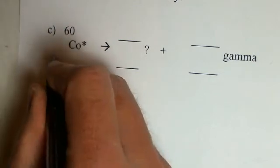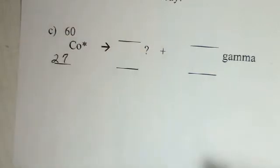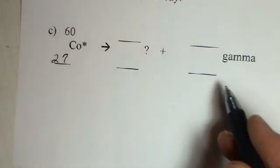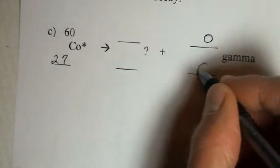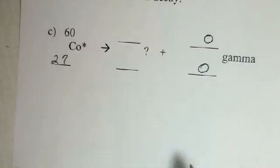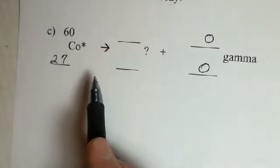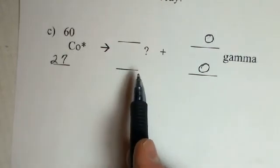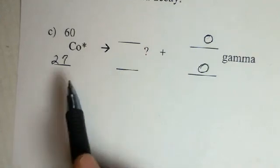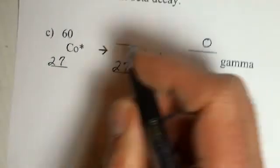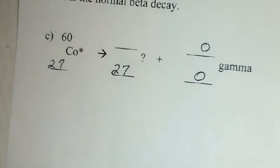Now cobalt has 27 protons. The gamma that comes off, we look now to fill in its blanks. The gamma has no protons or neutrons. The gamma has no charge. It's a photon. And now we have to complete the reaction over here. We have 27 for the charge number on the left, so we have 27 for the charge number on the right.